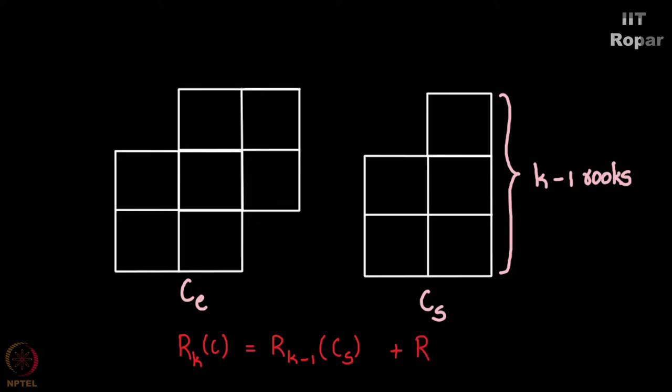And now this will be simply R_k of C_E. You see R_k of C, this chessboard is R_{k-1} of C_s, this chessboard, plus R_k of C_E. Now what I will do is I will multiply X to the K throughout. Why? You will soon realize why I am doing this little trick. So when I multiply X to the K throughout I simply get this R_k of C times X to the K, which is equal to R_{k-1} C_s X to the K plus R_k of C_E X to the K.